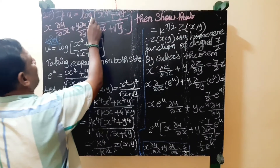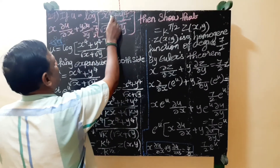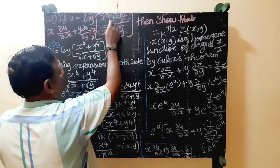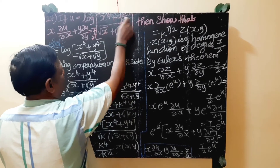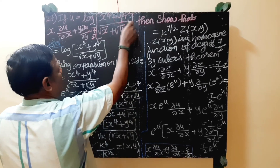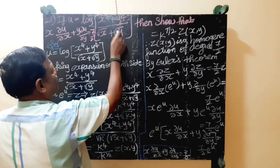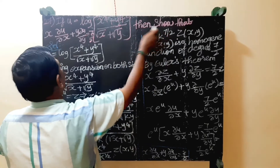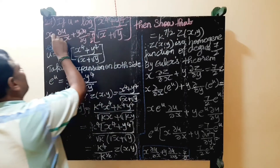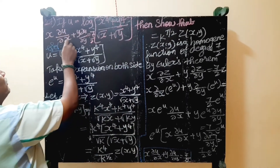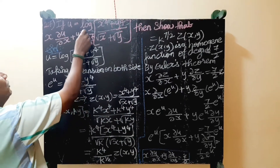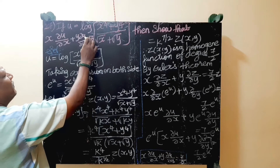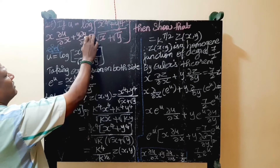If u equals log of (x power 4 plus y power 4) divided by (root x plus root y), then show that x dou u by dou x plus y dou u by dou y equals 7 by 2. Proof.